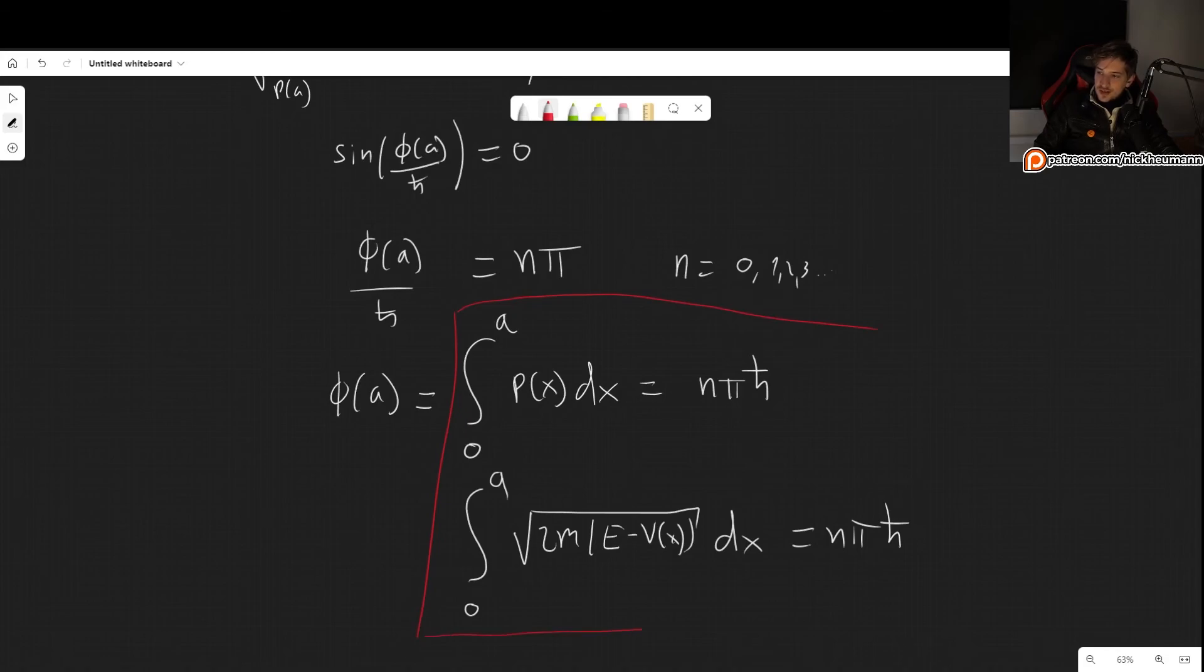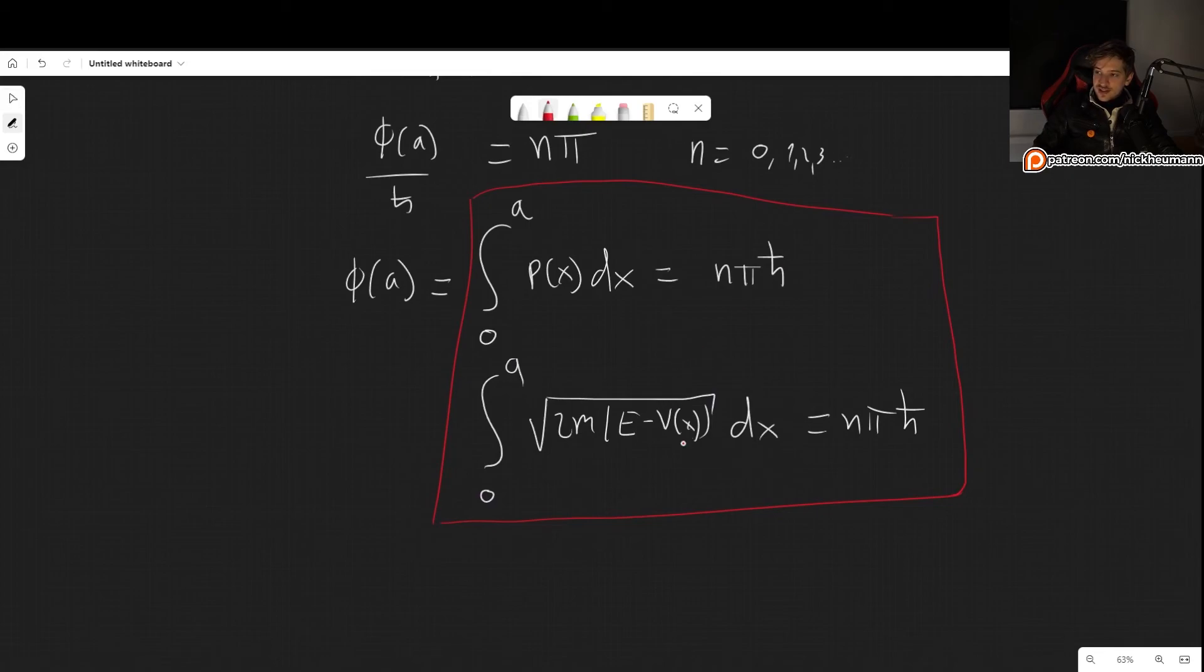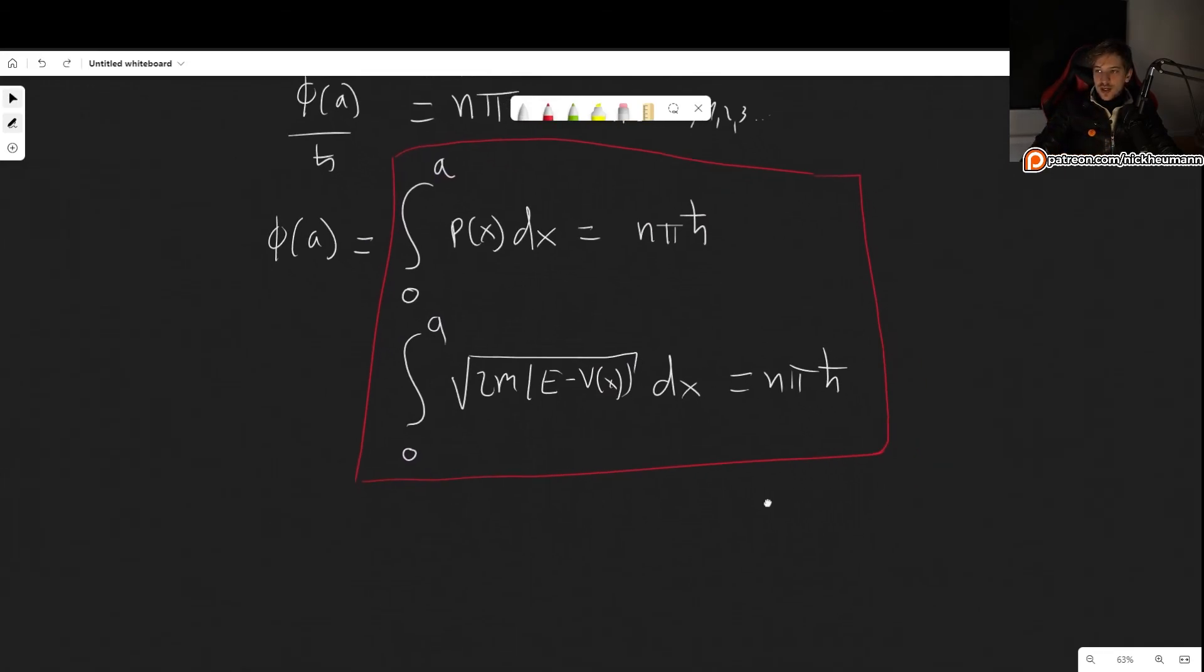We can use this to find any, or basically for any potential that is like the infinite square well. And this v of x, of course, is the potential that is inside of the square well. So let me just quickly show you how to use it.